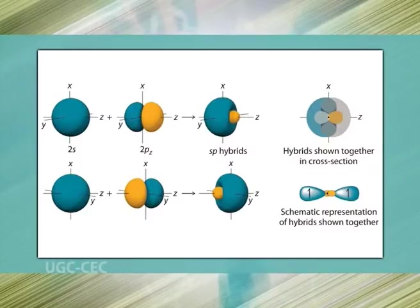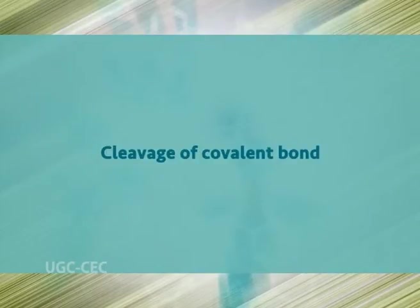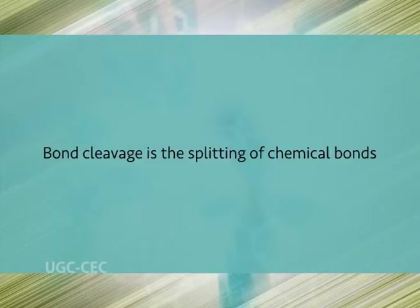For carbon, the most important forms of hybridization are sp² and sp³. Besides these, there are more possibilities to mix different orbitals into hybrid orbitals. An important one is sp hybridization, where one s and one p orbital are mixed together. The characteristic angle between the two sp hybrid orbitals is 180 degrees.